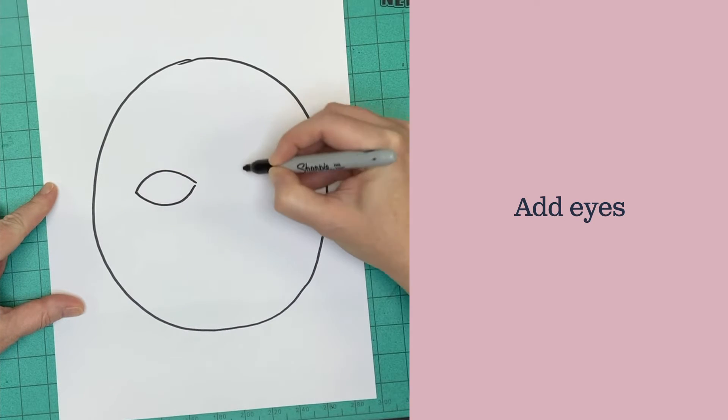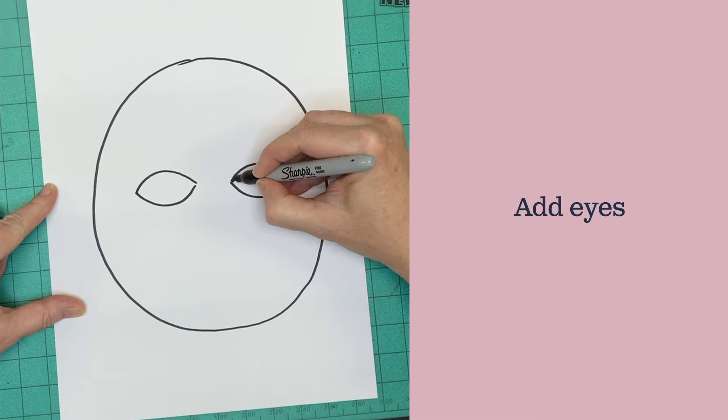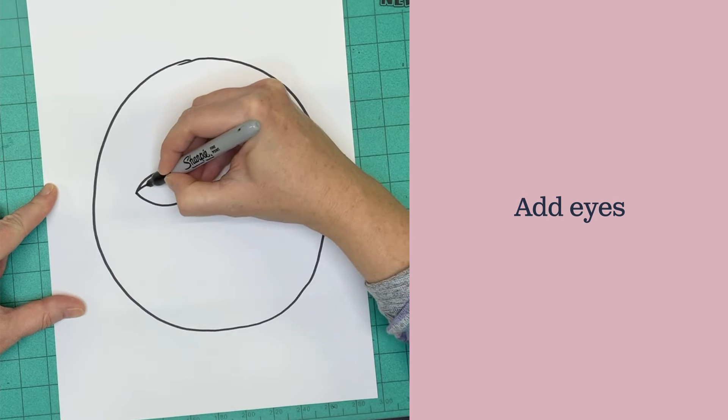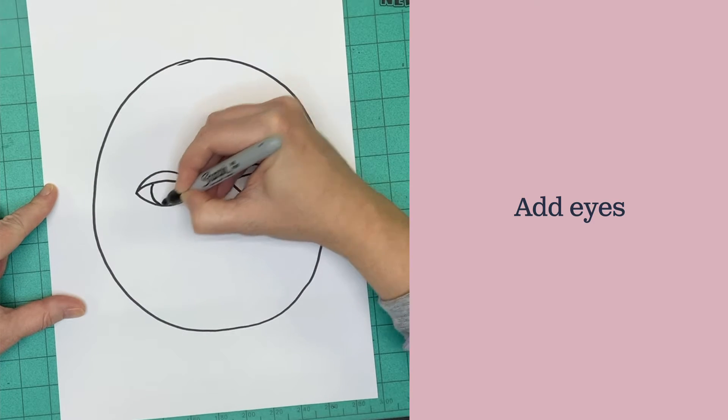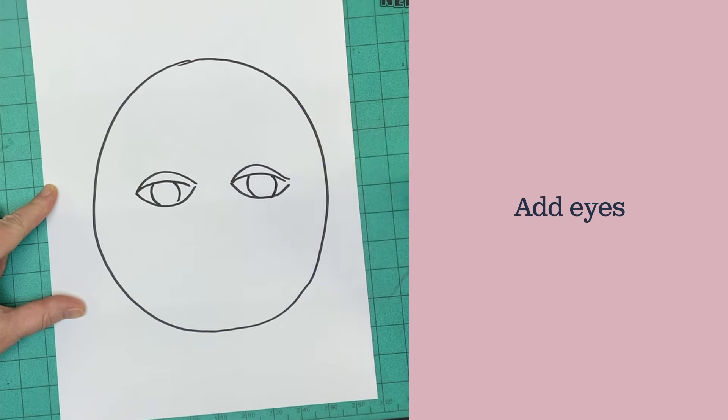Draw two football shapes in the middle. The hardest part is getting them the same size. Then you're going to draw a line across there to be your eyelids, and a little curve to be your eye inside of there.